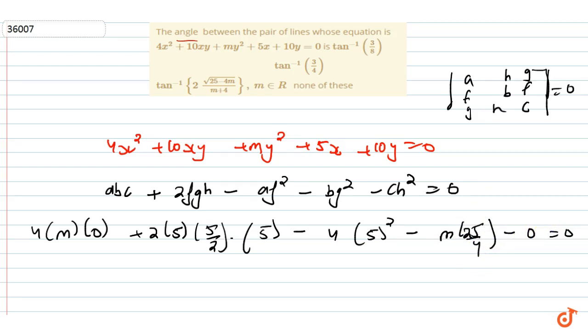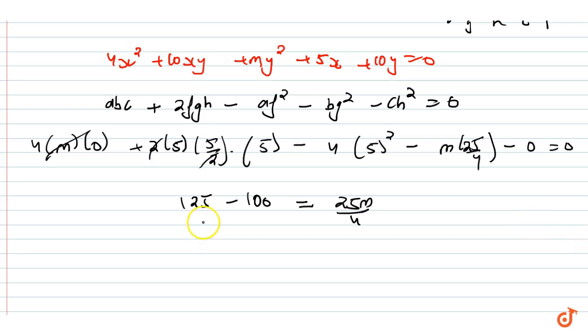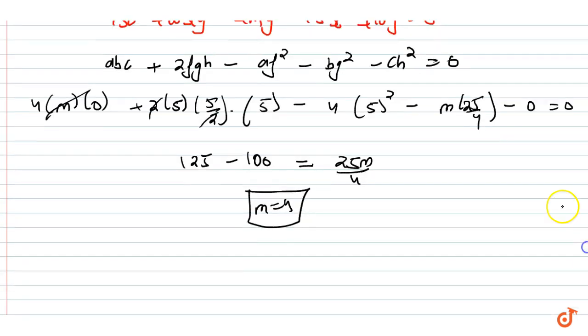Now we solve: this cancels, this cancels. 125 - 100 = 25m/4. So 25 cancels with 25, giving us m = 4. So the m value is 4.